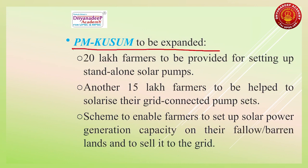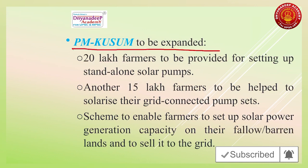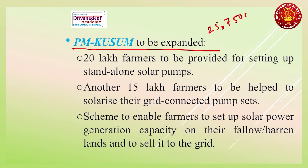PM KUSUM scheme will be expanded. It is launched by the Ministry of New and Renewable Energy. The full name is Pradhan Mantri Kisan Urja Suraksha evam Uttam Mahabhiyan scheme — a scheme for farmers for installation of solar pumps and grid-connected solar and other renewable power plants. The target is to add solar and other renewable capacity of 25,750 megawatt by 2022.